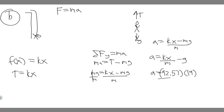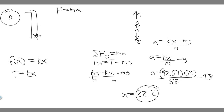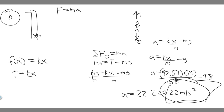So a equals 92.57 times 19 over 55, minus 9.8. Solving this gives 22.2, which we round to 22 meters per second squared. That is the answer to Part B — the maximum acceleration she experiences is 22 meters per second squared. Hopefully you found this video useful.